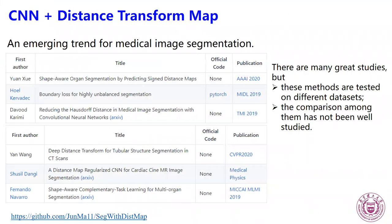Recently, incorporating digital transform maps into segmentation science has been an interesting new trend. There are many great studies cited in this slide, but these methods are tested on different datasets, and the combination among them has not been well studied.